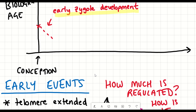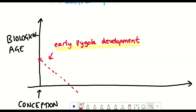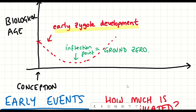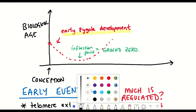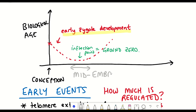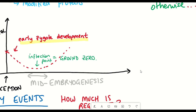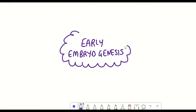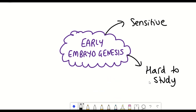We know this rejuvenation process cannot go on forever, and at some point the trajectory will be reversed, creating an inflection point. It's this inflection point that could be considered ground zero. The authors hypothesize that ground zero corresponds with mid-embryogenesis. However, studying early embryogenesis is incredibly difficult, as it's a very sensitive time period.